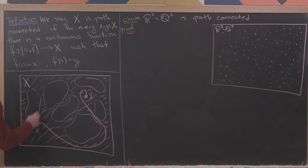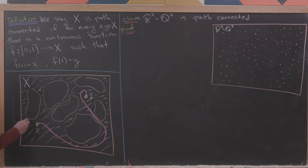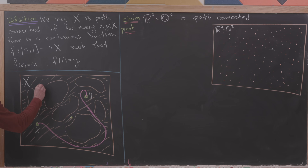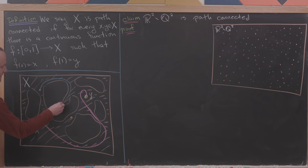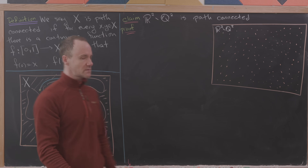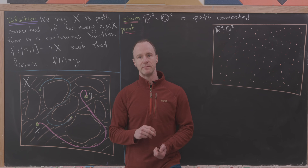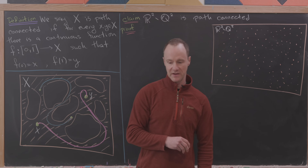For instance, if I take a point right here and maybe a point right here, I can for sure find a path between these two points. I can in fact find a bunch of paths, but maybe a kind of interesting path would loop around this little hole and then go into the point over here. So I think now we've got some idea of what it means for a space to be path connected.